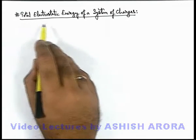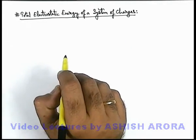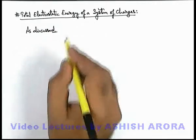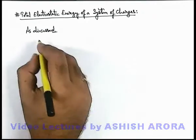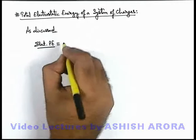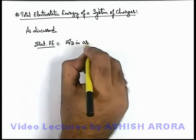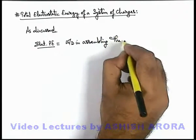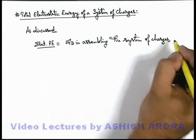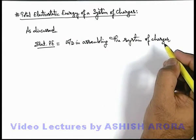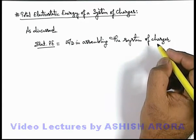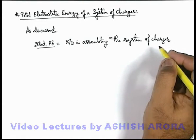Let us discuss the total electrostatic energy of a system of charges. As we already discussed when studying the potential energy of a system of charges, we can state that the electrostatic potential energy of a system is equal to the work done in assembling the system of charges. Whenever some charges are assembled in a given configuration, some work is done. If the charges are repelling each other, work will be done by the external agent and the system's potential energy will be positive.